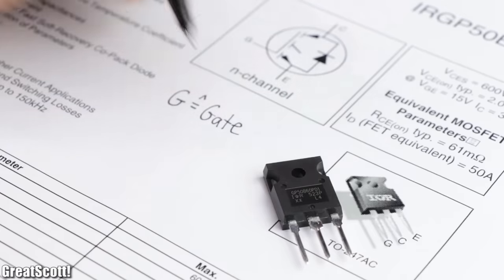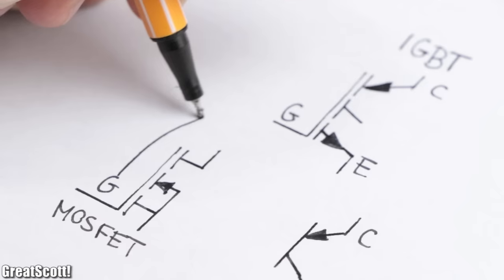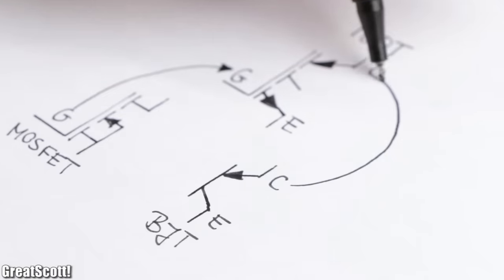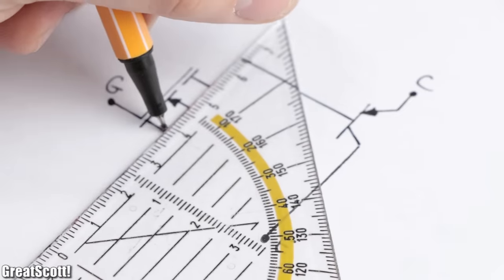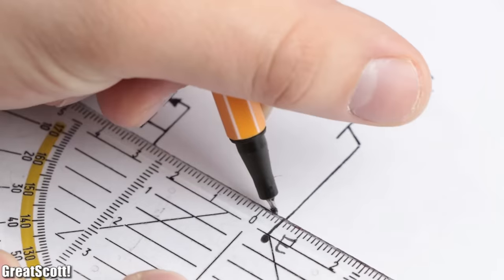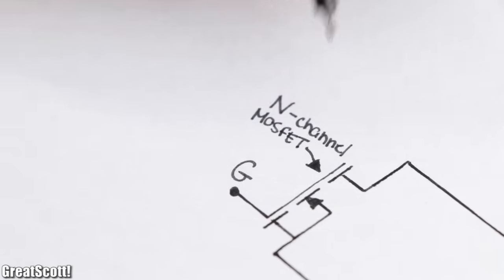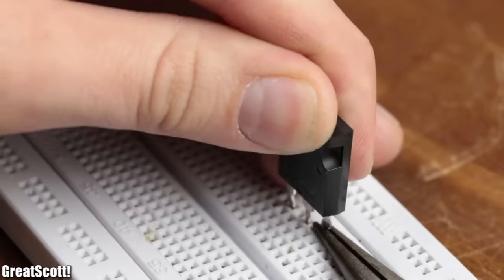The G stands for Gate, C for Collector and E for Emitter. And it is not a coincidence that labels were stolen from the MOSFET with its gate pin and the BJT with its collector and emitter pin. Because if we take a look at the simplified equivalent circuit of an IGBT, we can see that it basically consists of an n-channel MOSFET and a PNP BJT.